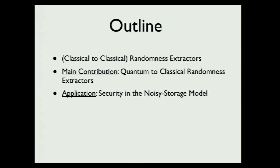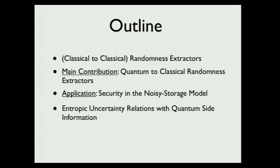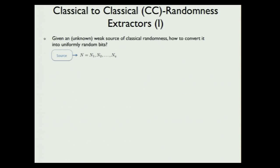The main reason why this paper got accepted is because there's an application in the so-called noisy storage model — a two-party cryptographic model where the parties are quantum and assume they only have noisy storage. Under this assumption some security can be shown. It turns out that randomness extractors have a very close connection to entropic uncertainty relations with quantum side information. I'll mainly focus on the noisy storage application, then conclude and mention open problems.